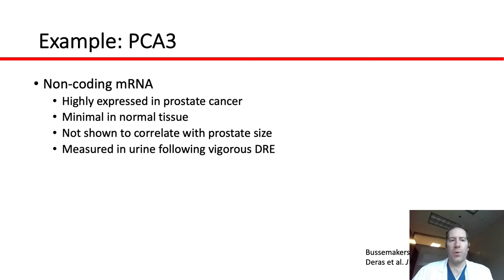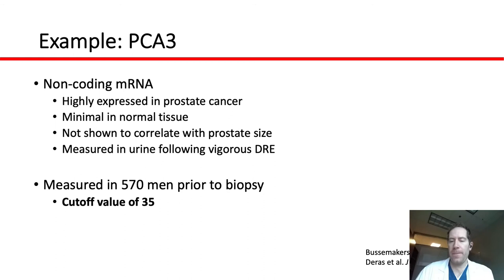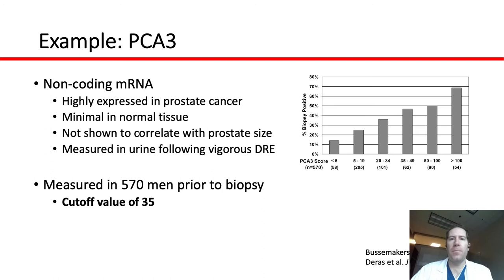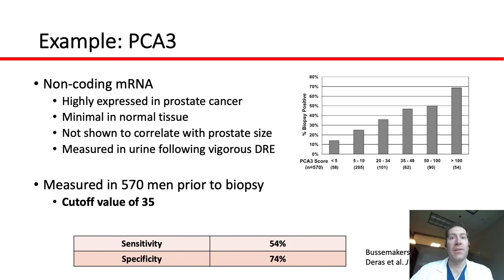Let's do a real-world example using PCA3 — a non-coding mRNA highly expressed in prostate cancer, with minimal normal tissue expression, not correlated with prostate size, and measurable in urine following a vigorous DRE. Studies examined PCA3 in the setting of diagnosing prostate cancer, and thresholds were chosen. As the PCA3 level increased, the percentage of men with a positive biopsy increased as well. Based on a cutoff value of 35, the sensitivity was 54% and specificity was 74% for diagnosing prostate cancer.